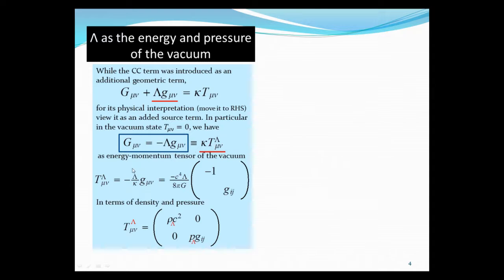According to this term, T_lambda equals minus lambda over kappa. Kappa is 8 pi G over c to the fourth. And g_mu_nu, the energy momentum tensor in the Robertson-Walker space-time, can be written as minus 1, 0, block diagonal, 3 by 3 g_mu_nu, g_i_j here. So we can interpret this as energy momentum tensor, which can be written in terms of the density term and pressure term.